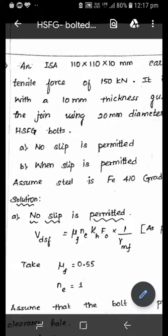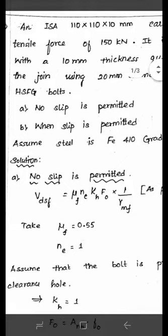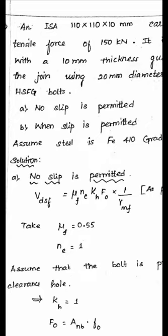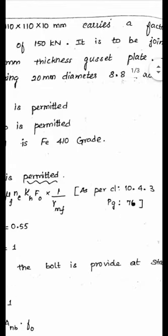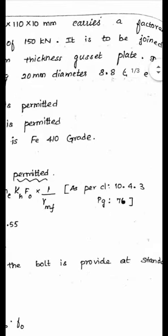Starting Part 1 of the problem — no slip is permitted. In that case, the bolt will act like a friction type bolt. For the friction type bolt, we have to find out the slip resistance. The formula is V_DSF = μF × NE × KH × F0 × (1/γMF), obtained from clause 10.4.3, page 76.